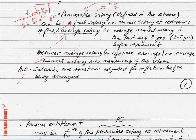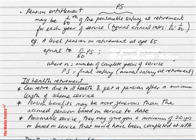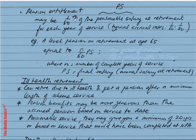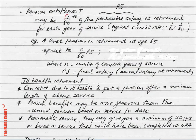Please take note: salaries are sometimes adjusted for inflation before being averaged. Next, pension entitlement may be 1/80th of the pensionable salary at retirement for each year of service. This 1 over 80 is a typical accrual rate — it can also be 1 over 60. When working out a question on pensions, read the question carefully.